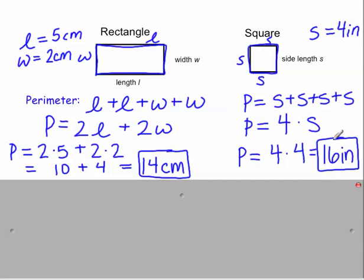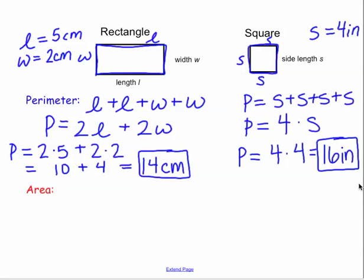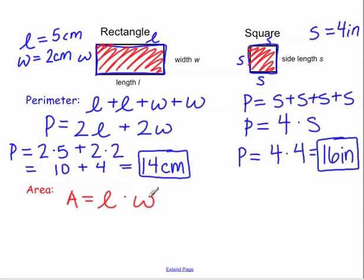And there's your perimeter. Now let's move on to area. Area is talking about the amount of space, or surface, that the object takes up. So for a rectangle, the area is equal to its length times its width.